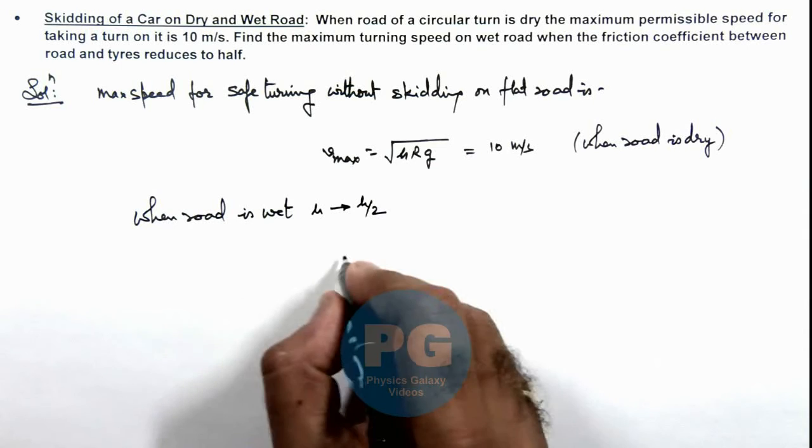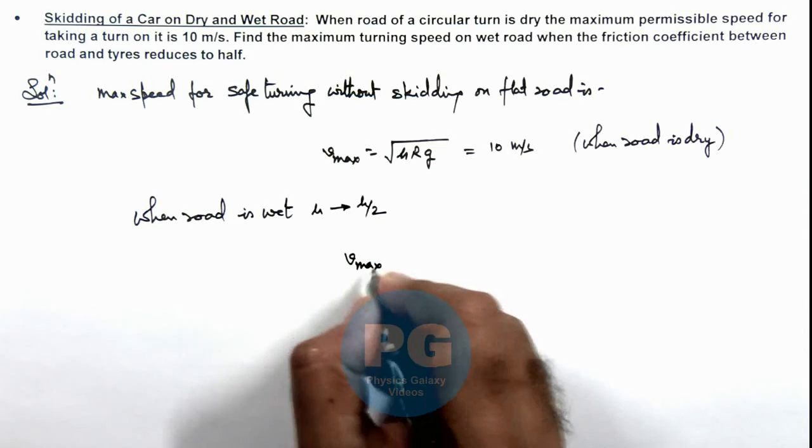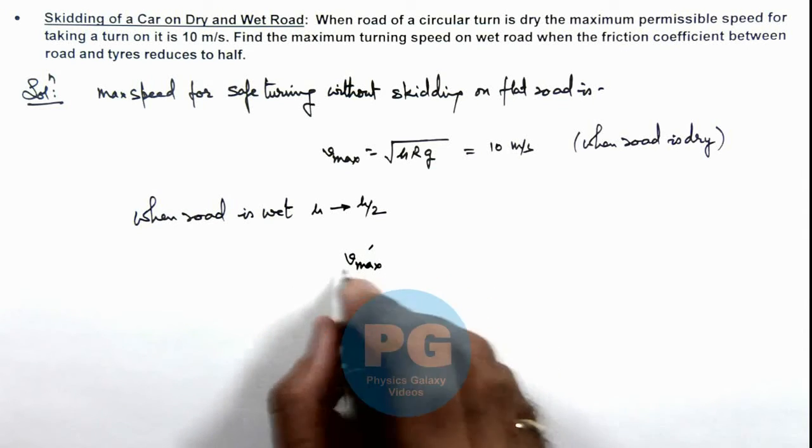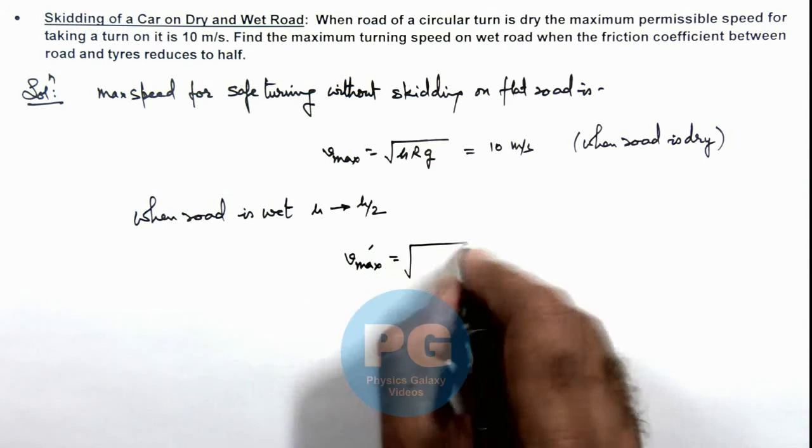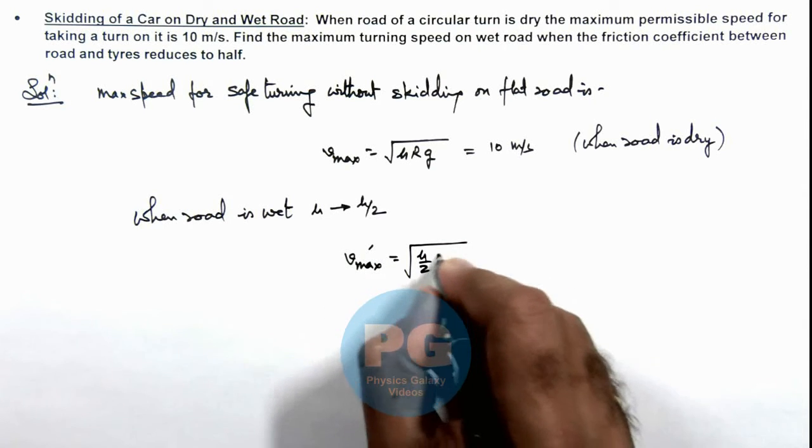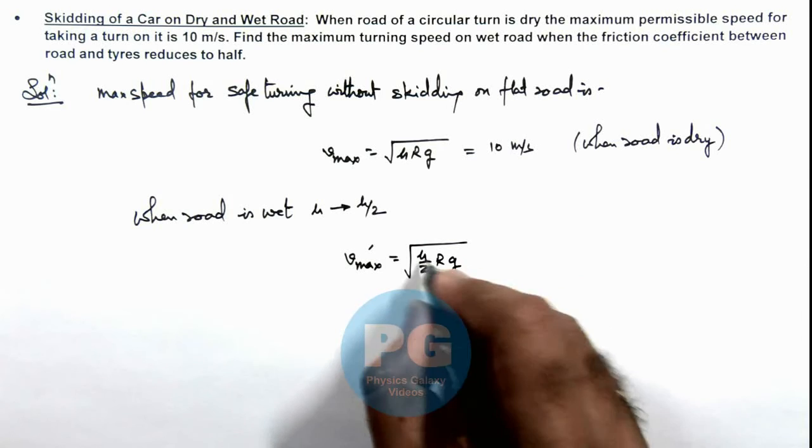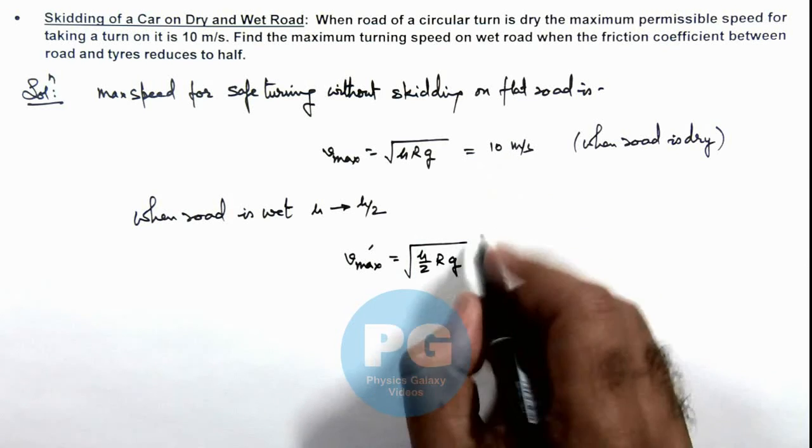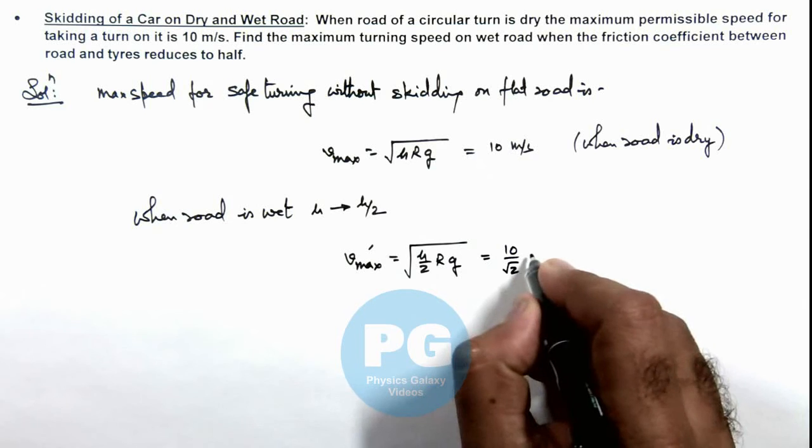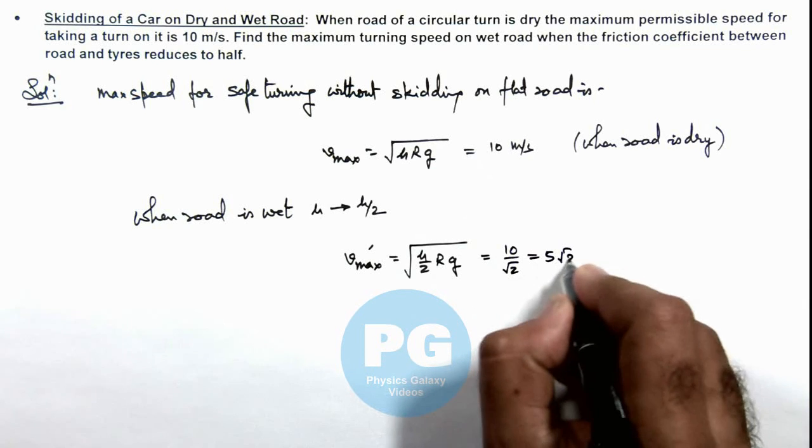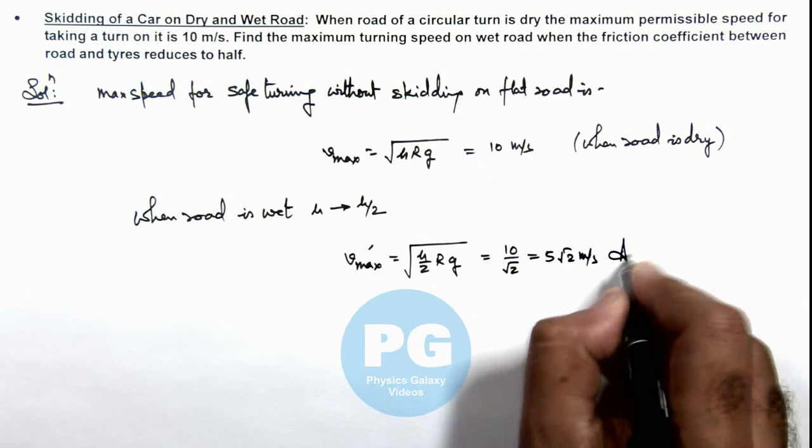v_max prime, the new maximum speed at which safe turning is possible, is √(μrg/2). Since √(μrg) equals 10 meters per second, this becomes 10/√2, which equals 5√2 meters per second. That is the result of this problem.